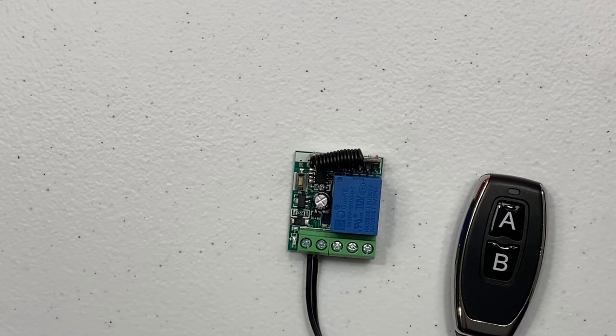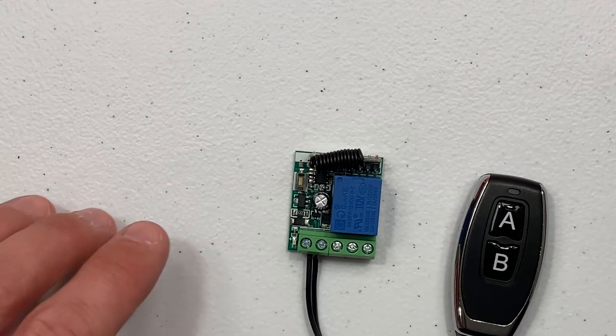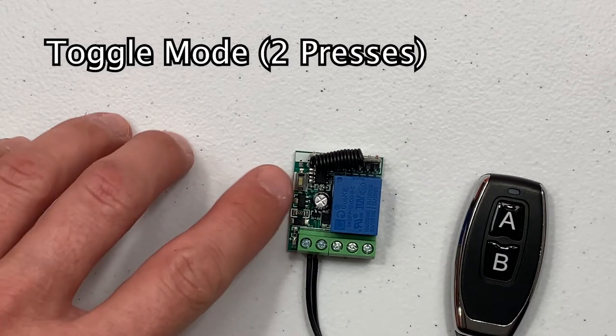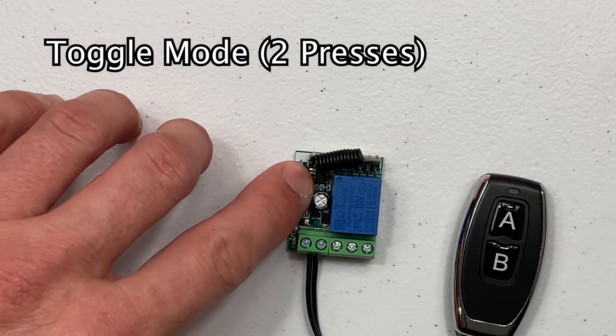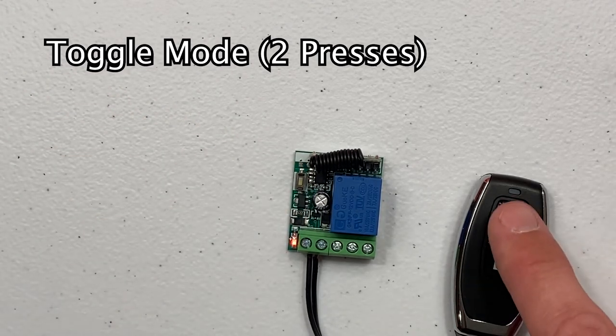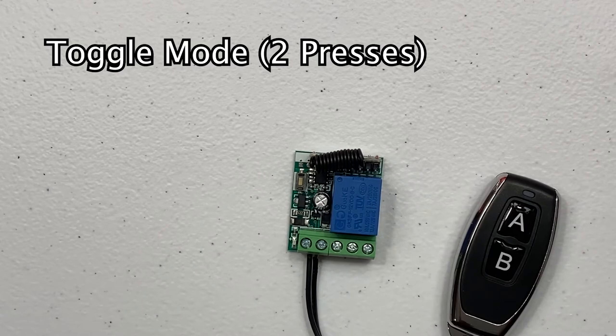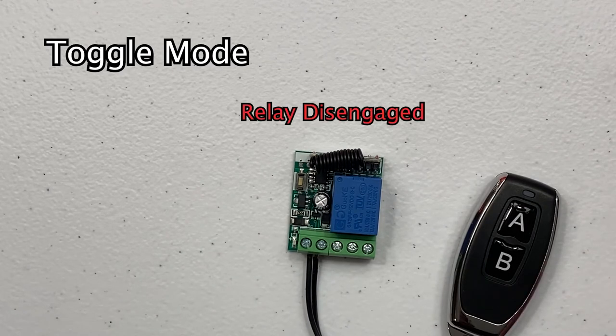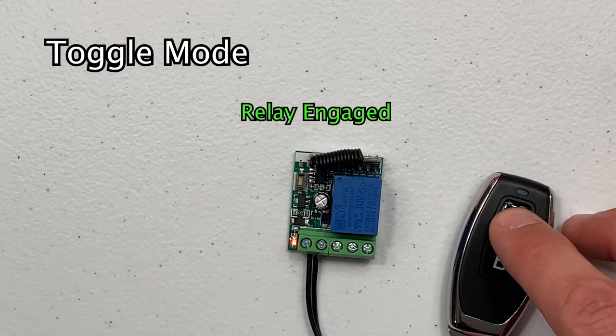Now to set the relay to toggle mode, repeat the same procedure as before but instead of pressing the learn button once, press it two times. Once the remote is paired, repeated presses of the button will toggle the relay on and off.